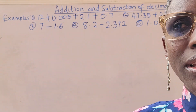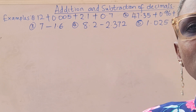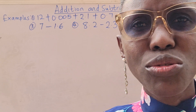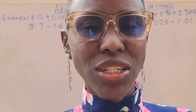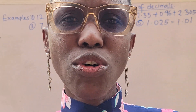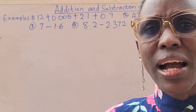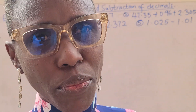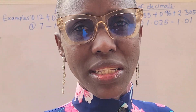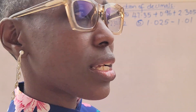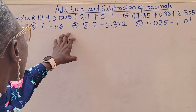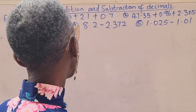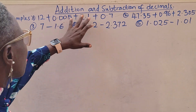Today we'll be going through another lesson: addition and subtraction of decimals. One thing about this topic is that children make mistakes, mostly because they do not understand how to arrange. They are good with addition and subtraction skills, but arrangement is the major reason why some people fail this topic. So pay attention and you will understand.